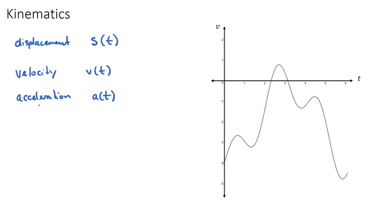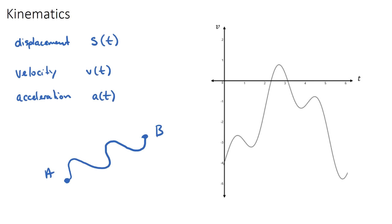We really need to understand what displacement means. Displacement is the distance you are away from your original starting point. The best example: if you start at point A and get to point B via a zigzag journey, the total distance is the entire length of that zigzag path, but the displacement is just the straight-line distance from A to B.